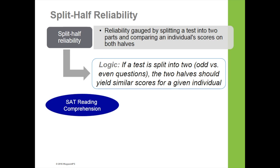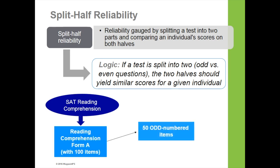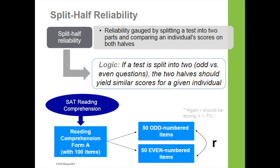Going back to the SAT reading comprehension example, if Form A has 100 items, we take the 50 odd-numbered items and the 50 even-numbered items and administer them to a group. We would expect that if a person does really well on the 50 odd-numbered items, they should also do very well on the 50 even-numbered items and vice versa. We would expect the correlation R to be very high, assuming the test is reliable.